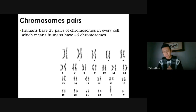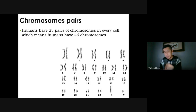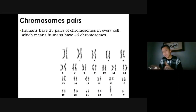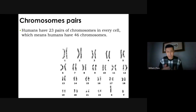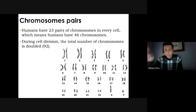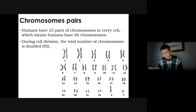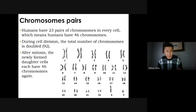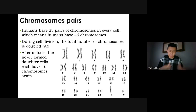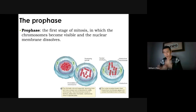Humans have 23 pairs of chromosomes — pairs that are not connected in the middle, unlike when they've made a copy ready to divide. We have 46 chromosomes normally. When a cell is about to divide, the number of chromosomes doubles to 92 because you make a copy. After mitosis is complete, you have two cells each with 46 chromosomes again — you double, then split into two.